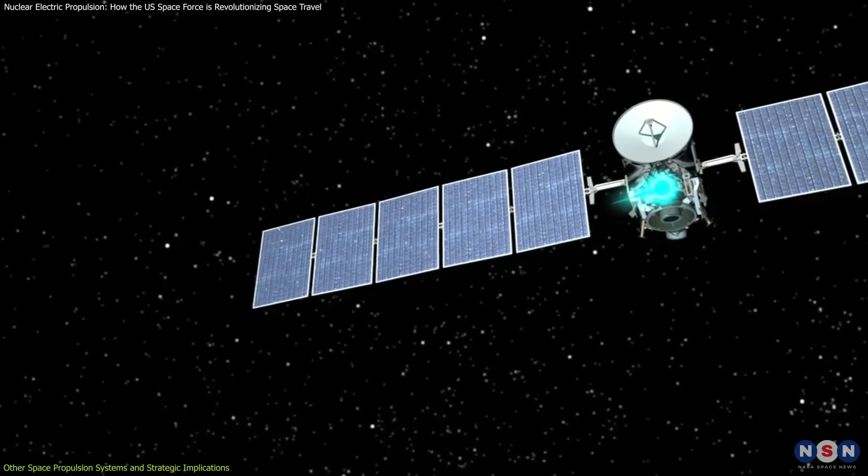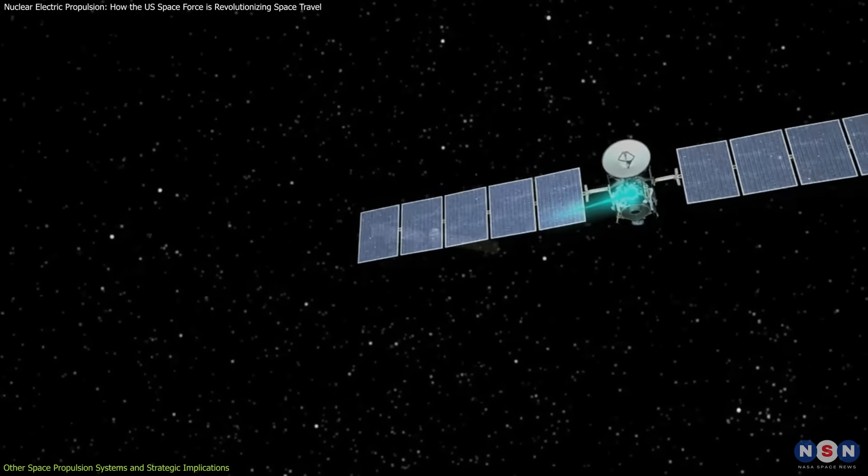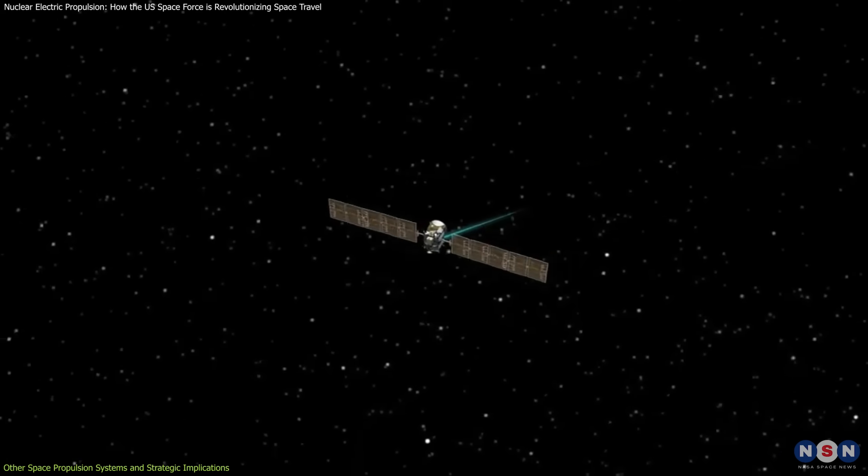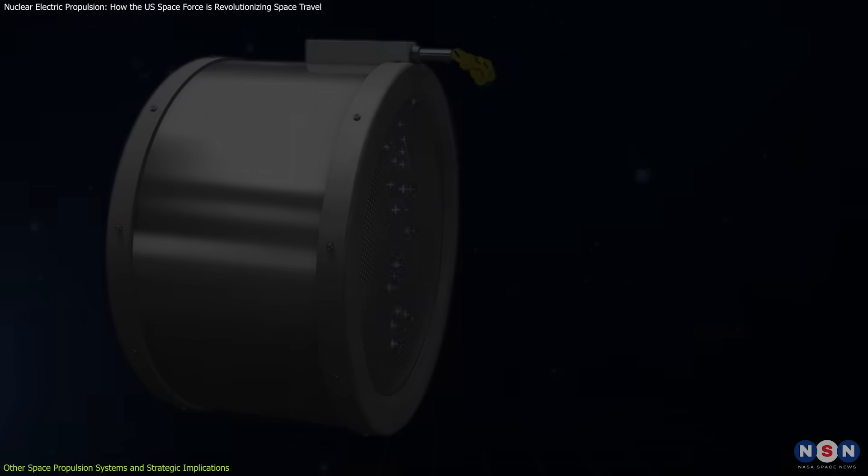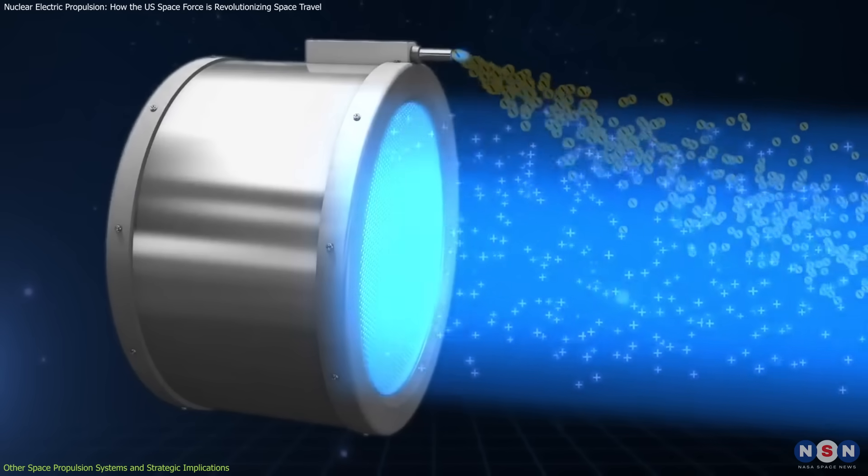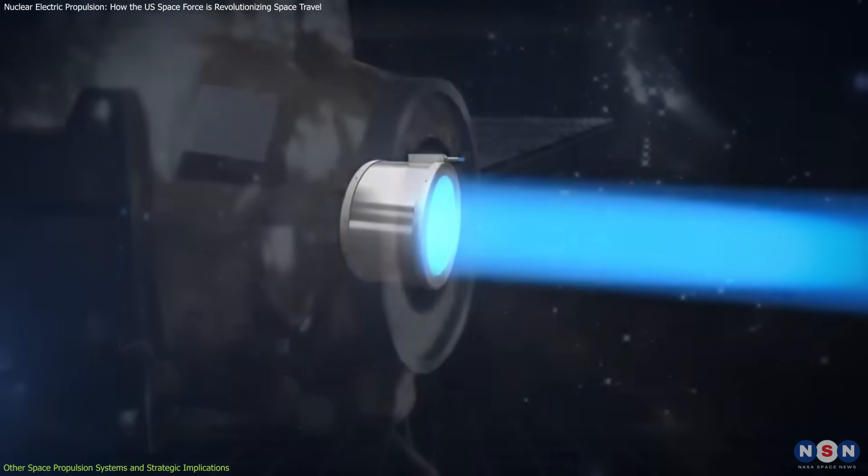Ion thrusters, such as those used on the Dawn mission to the asteroid belt, are another existing technology. They use electric fields to accelerate ions, providing a gentle but continuous push.